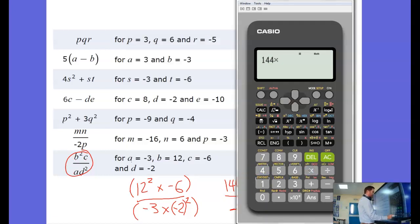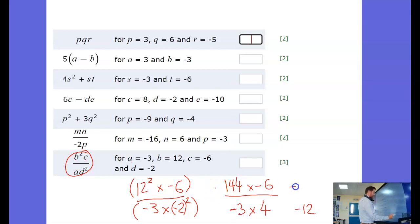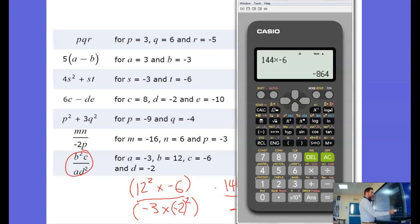144 times negative 6 is minus 864, and that divided by minus 12, let's divide by negative 12.